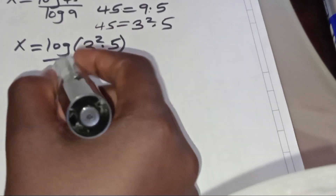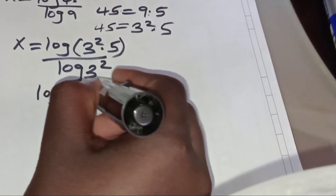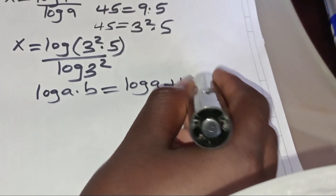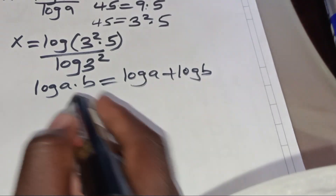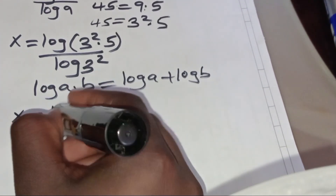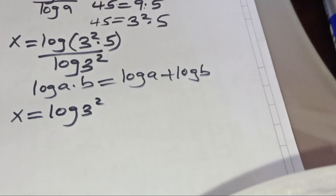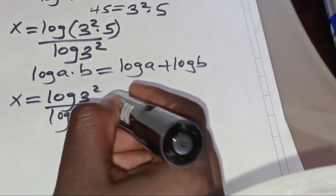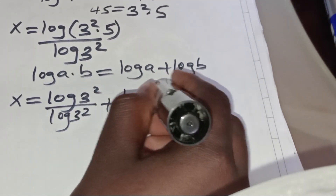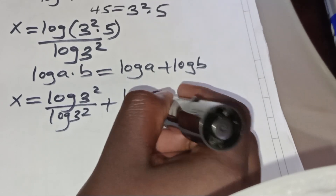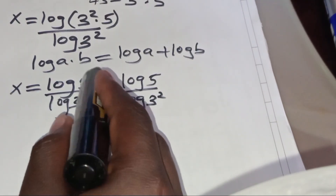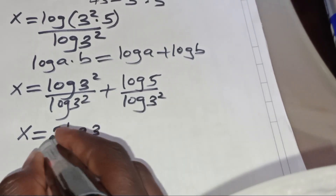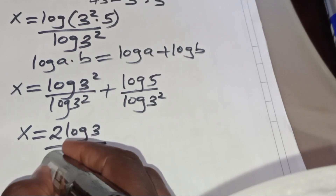log(3² × 5) is in the form of log(A × B), which we can express as log A plus log B. Applying this product rule property, x equals (log 3² plus log 5) divided by log 3². Applying the power rule, log 3² becomes 2·log 3, so we have (2·log 3 plus log 5) divided by 2·log 3.